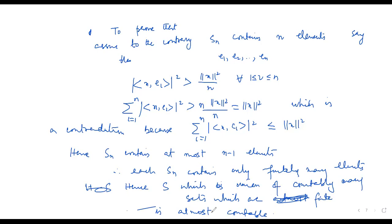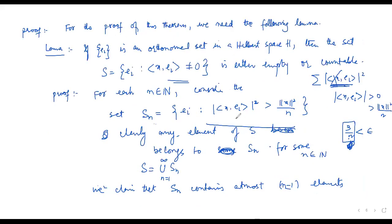Since S is a union of countably many finite sets S_n (n from 1 to infinity), and countable union of finite sets is countable, S is at most countable.